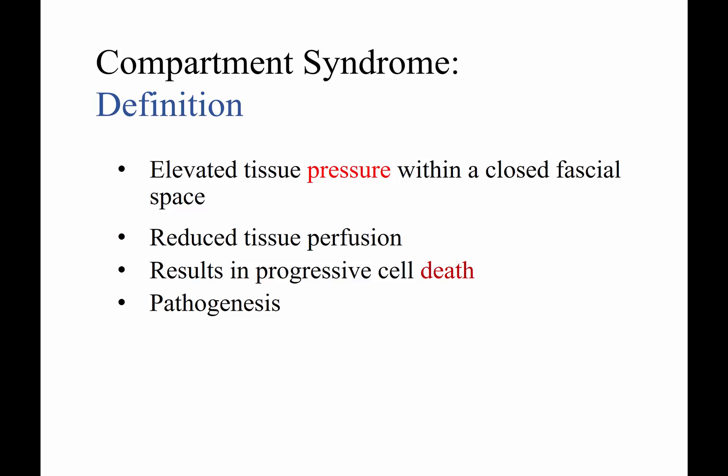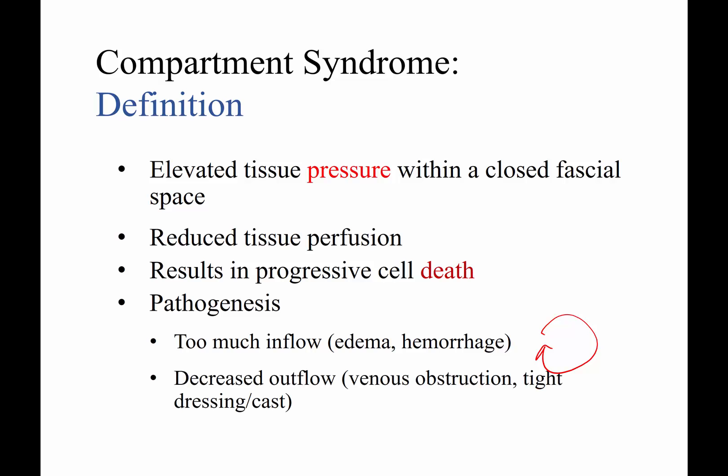A good definition of compartment syndrome: it's when you have elevated tissue pressure within a closed fascial space that results in reduced tissue perfusion and eventually progressive cell death. This occurs really due to too much inflow — you may have edema or hemorrhage, and once you start getting inflammation and potentially impaired perfusion, you have leaky vessels and more edema, creating a vicious cycle of increased fluid leading to increased pressure. Decreased outflow can also be a cause — a tight dressing, a tight cast, or venous obstruction.